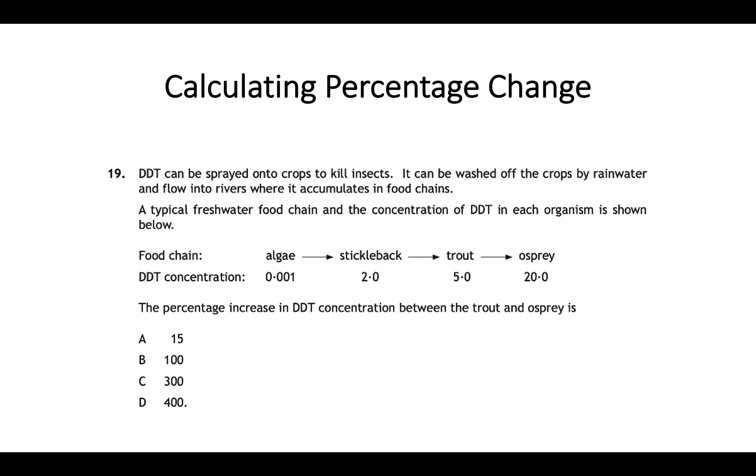So we have a food chain here of an algae, a stickleback, a trout and an osprey. And you have these DDT concentration values for 0.001 for the algae, we have 2 for a stickleback, 5 for the trout and 20 for the osprey. So straight away you can see there's an increase each time so there's gonna be a positive increase here. But the question asks you what the percentage increase in DDT concentration between the trout and the osprey is.